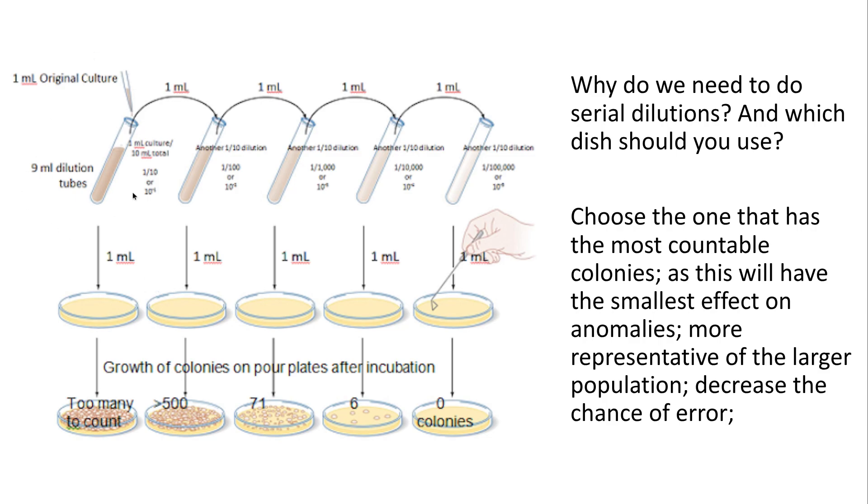Quite often if I was to put my original culture, my highly concentrated culture, straight onto a petri dish I'm going to have too many colonies growing to count. So I need to dilute and do a serial dilution in order to produce different plates and select the right one which has just about the most countable colonies which will have the smallest impact upon anomalous results. It will also be more representative of the larger population and it also decreases the chance of error.